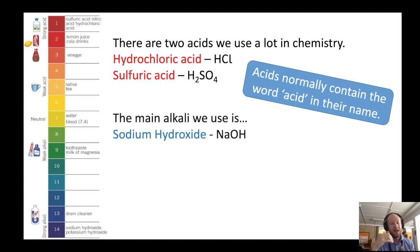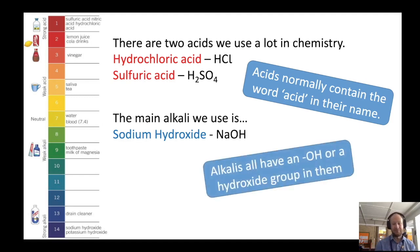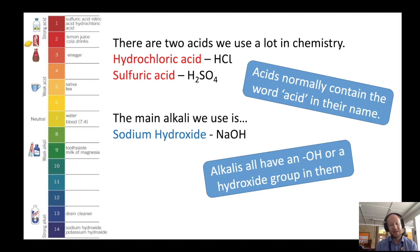We only tend to use one alkali in the science lab, and that's sodium hydroxide. You need to know its symbol, which is NaOH. All alkalis will have an OH group in them — what we call a hydroxide group. So you can tell that sodium hydroxide is an alkali from its name.